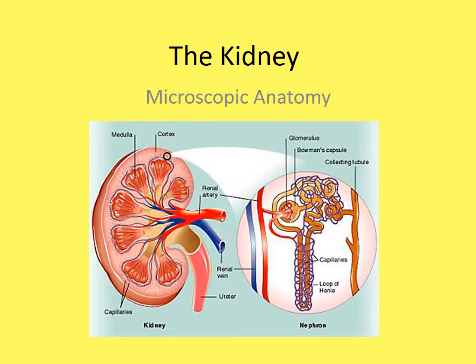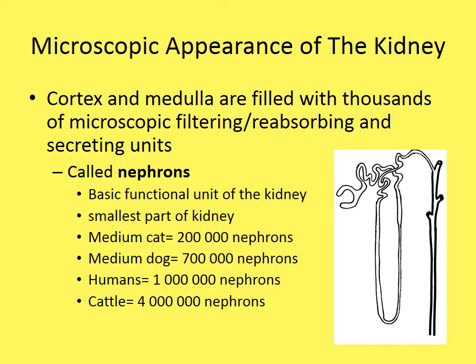Now for the microscopic anatomy of the kidney, which can get quite complex. The cortex and medulla are filled with thousands of microscopic filtering, reabsorbing, and secreting units called nephrons. The nephron is the basic functional unit of the kidney — how the kidneys work is thanks to the nephron. Each kidney contains thousands of them.